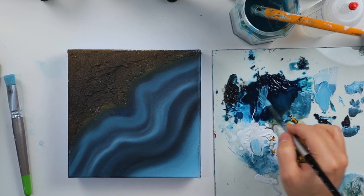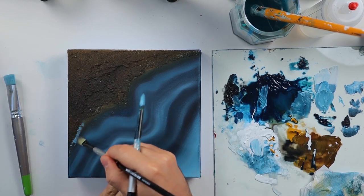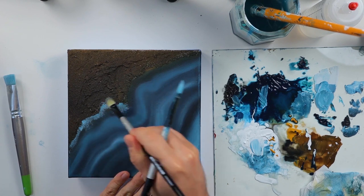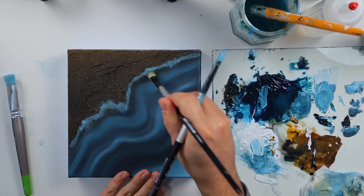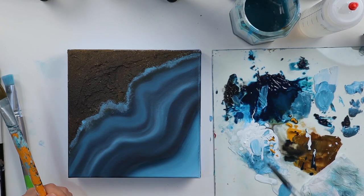Now with a smaller brush, I will add a little bit more details and cracks to the color. I like to imitate the stone. I'm also adding extra lines and layers.